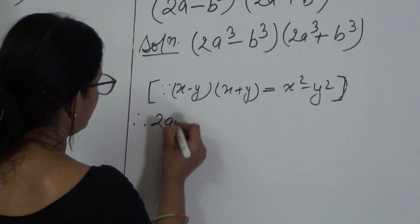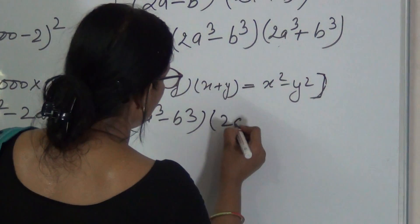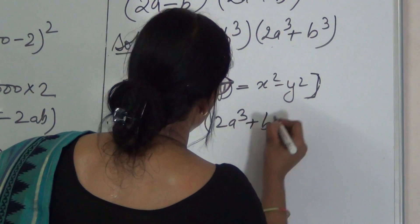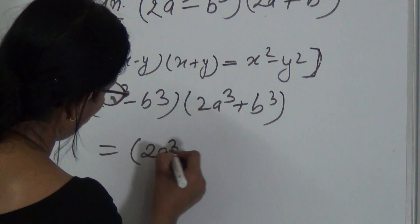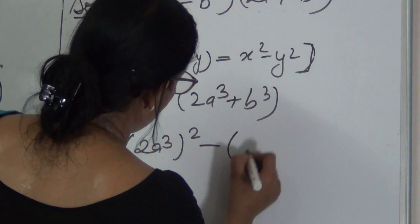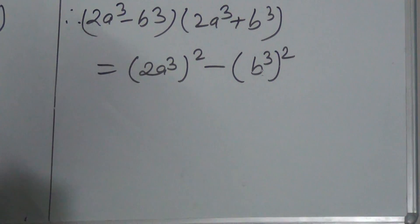Therefore, 2A cube minus B cube into 2A cube plus B cube is equal to 2A cube whole square minus B cube whole square. Let us find square of these numbers.